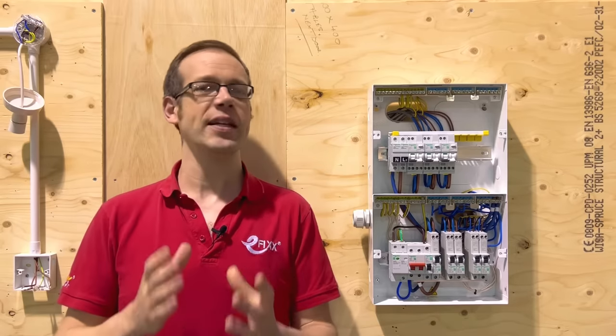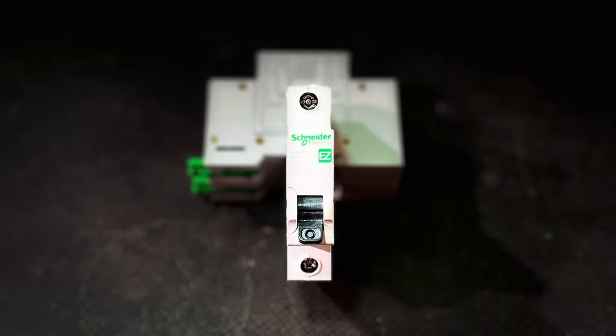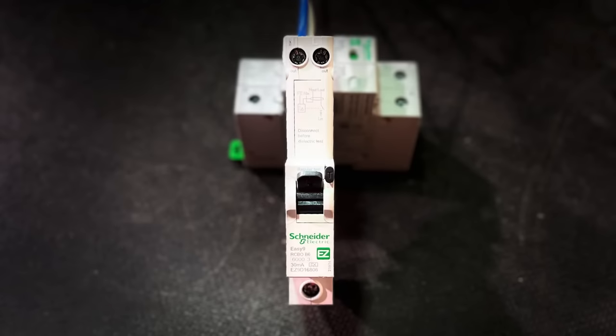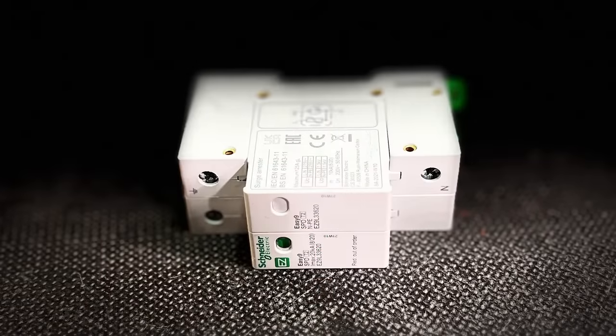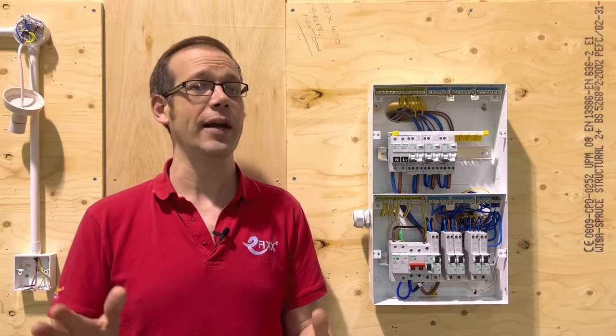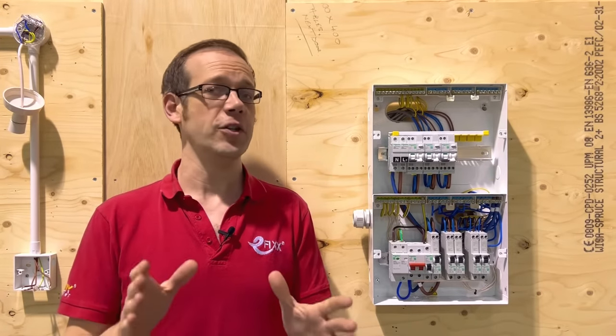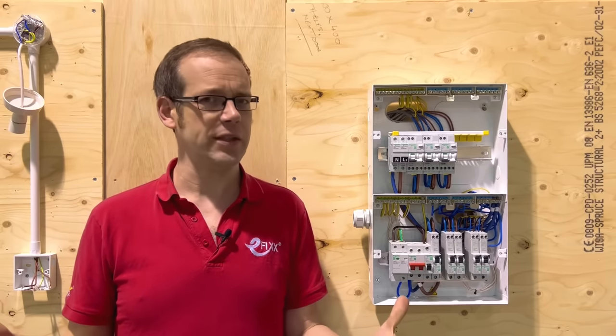Now our next type of protective device is a little bit different to the ones that have gone before, because both of those kept circuits safe by disconnecting them when faults occur. However, a surge protection device or SPD will quietly and consistently monitor and keep your installation and connected equipment safe until it quietly slips away into non-functionality and requires replacement. So what is it and what does it do?